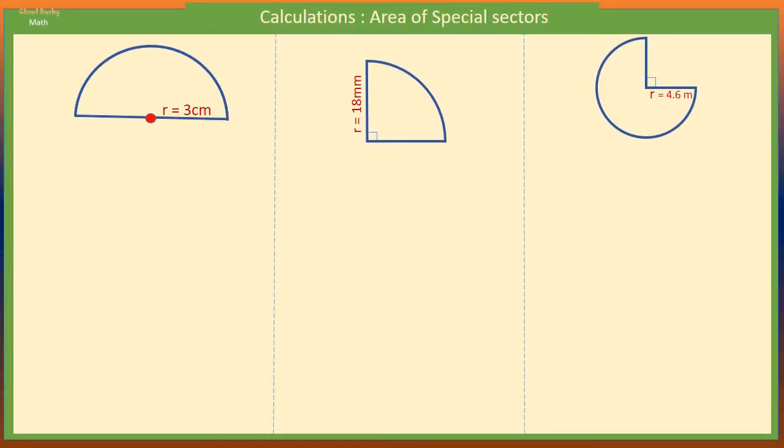So we want the area of this semicircle. Its radius is 3 centimeters. The area of a circle is given by A = πr², but we only have half a circle.